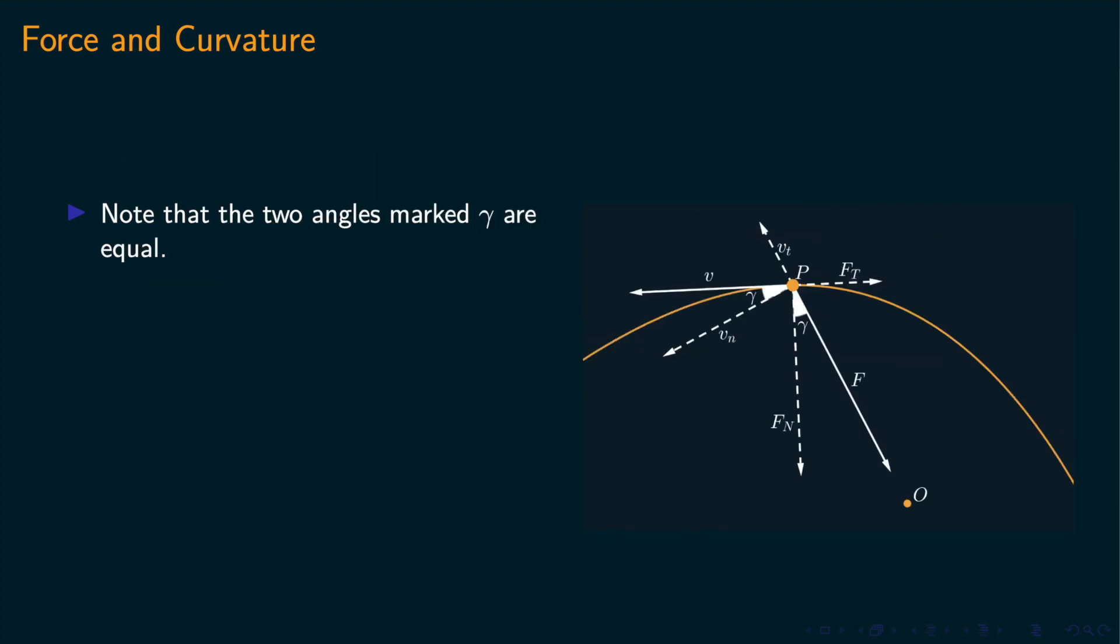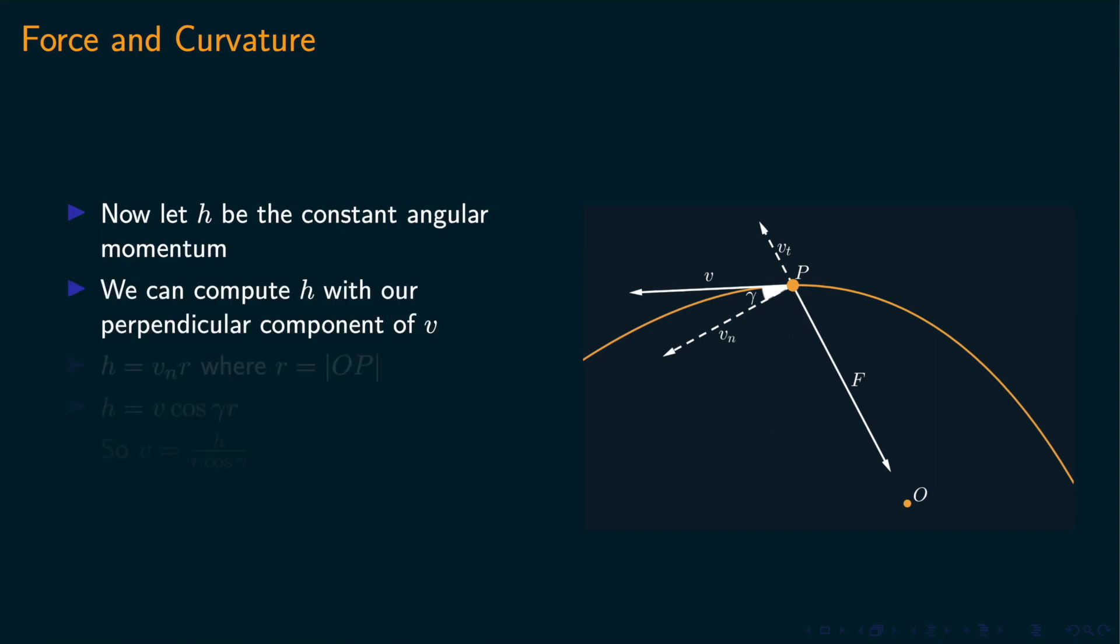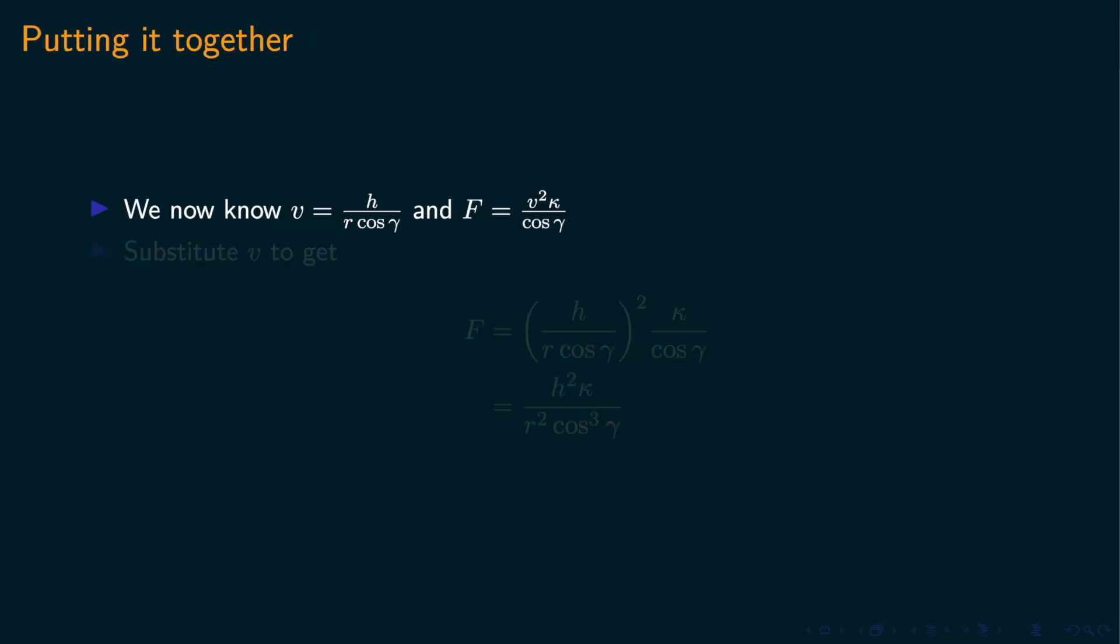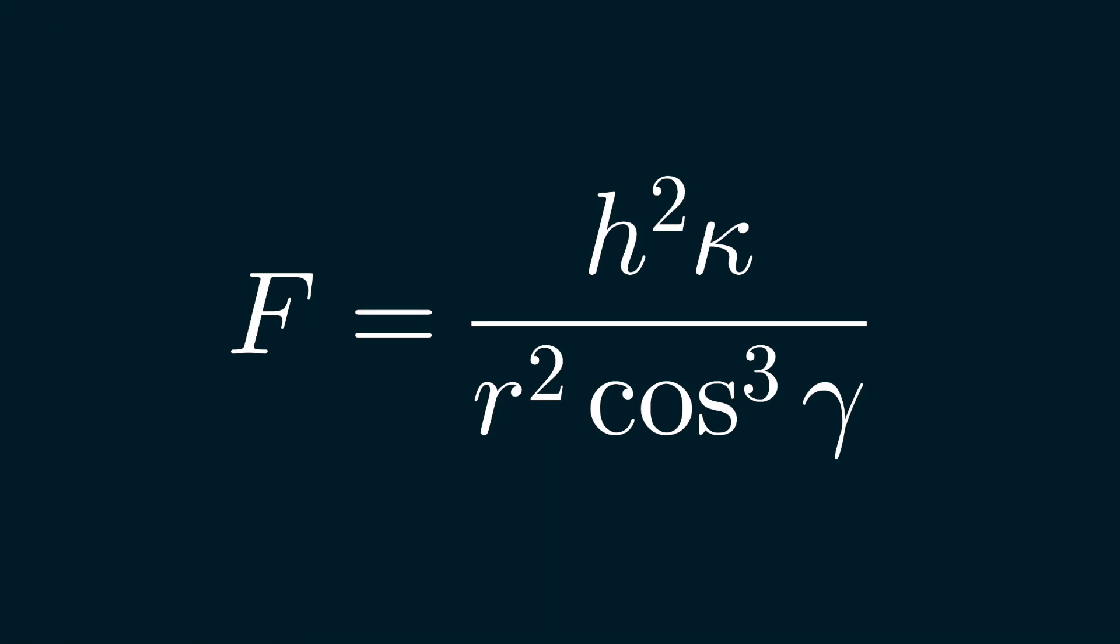Now we can decompose the velocity into parts parallel and perpendicular to the force. Note that the angle is the same as before. Then conservation of angular momentum allows us to express the speed of the orbit in terms of geometric properties of the orbit, the distance from origin and angle of the tangent. Now we may substitute these equations to eliminate v, and we get f equals h squared kappa over r squared cos cubed gamma.